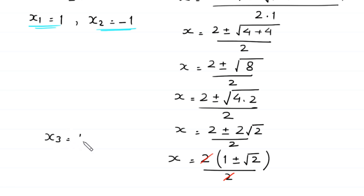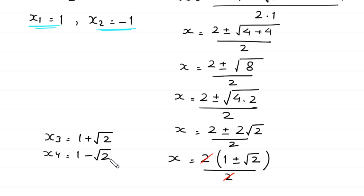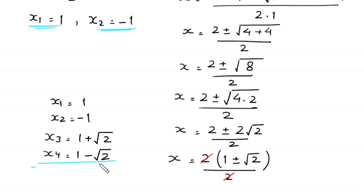Simplifying, x equals 1 plus or minus square root of 2. So x₃ equals 1 plus square root of 2 and x₄ equals 1 minus square root of 2. These are the four solutions of this equation.